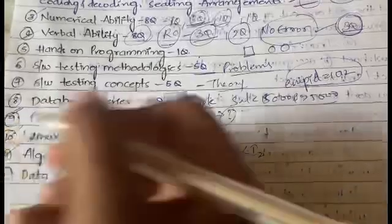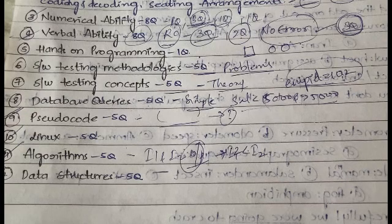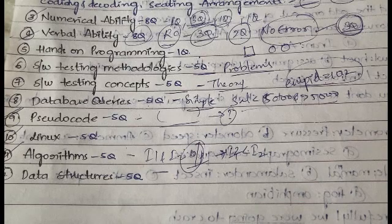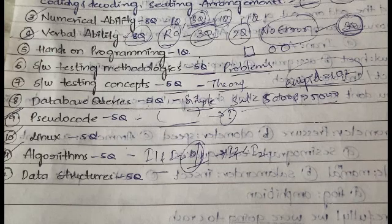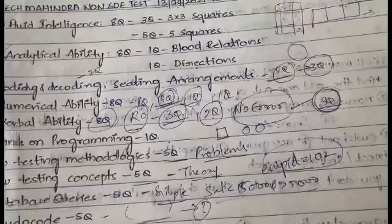In Data Structures, most questions across papers are about sorting. In the 13th April paper, one question gave an array to sort using merge sort. Another asked the syntax to insert elements into a queue. Trees also had two to three questions — on inserting elements into a binary tree or deleting an element that already has children.